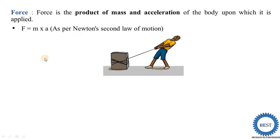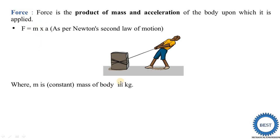Next we understand the unit. Here M is considered as a constant, and the unit of M — that is, mass — is kg. The unit of acceleration is meter per second square. We find this out because first we measure the distance and differentiate it with respect to time — that is, with respect to seconds — and we get meter per second.